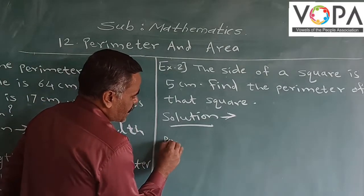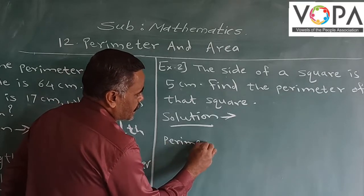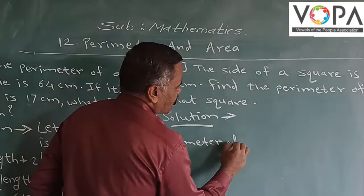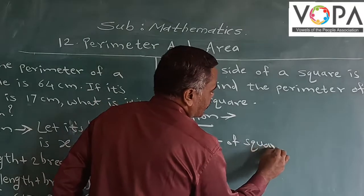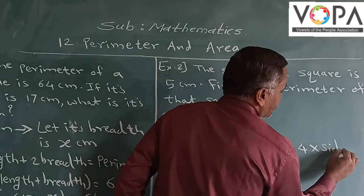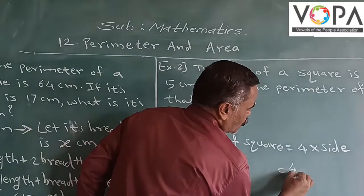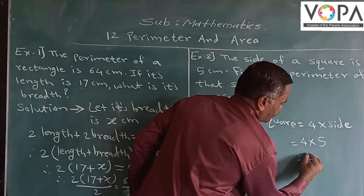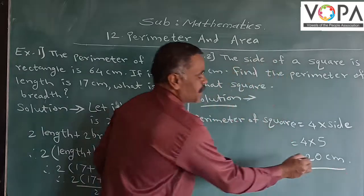First, write down the formula, perimeter of square is equal to 4 into side. 4 into side is equal to 4 into 5 is equal to 20 cm. The perimeter of that square is 20 cm.